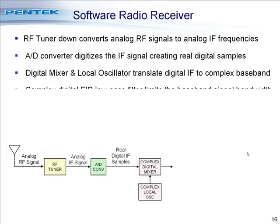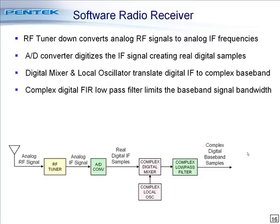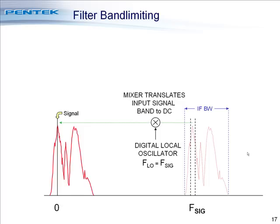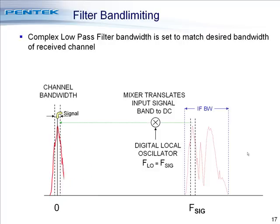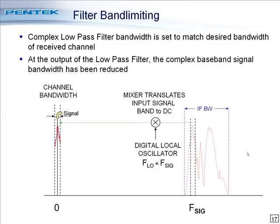We use the digital mixer to translate the real input down to a complex baseband signal. Because it's a complex signal, we preserve the negative and positive frequencies centered at 0 Hz, getting a full representation of the signal that was previously centered at a higher IF frequency. We then take the complex baseband translated signal and use an FIR low-pass filter to limit the bandwidth. We set the digital complex low-pass filter to match the desired bandwidth of the received channel, removing all positive and negative frequency energy outside the bandwidth of interest, leaving just the signal we want.